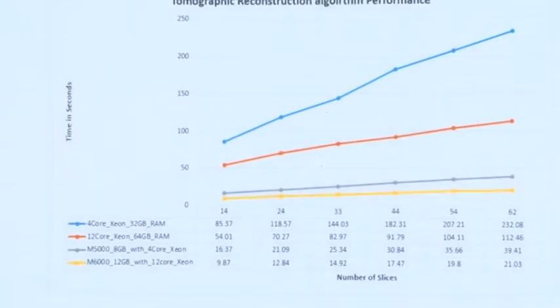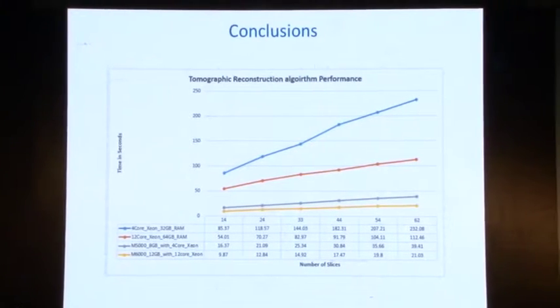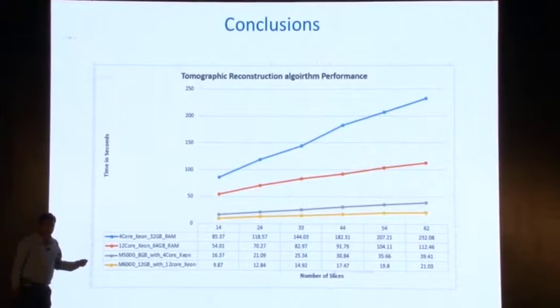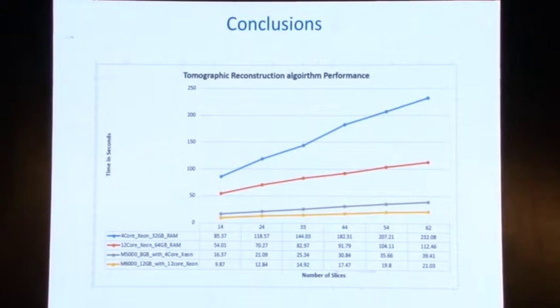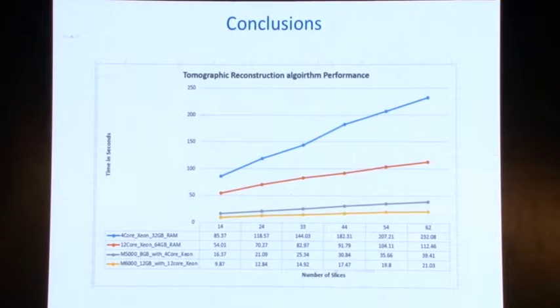For the results, we experimented with different CPUs and GPUs. In the graph: 4-core CPU, then 12-core CPU, then M5000 GPU card, then M6000 GPU card. We achieved an average performance improvement of more than 5 times — 2.5 minutes became approximately 25 seconds — which exceeds what our client and marketing team expected.